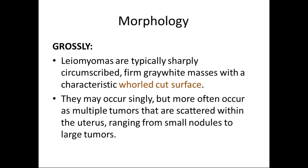Coming to the morphology of fibroids, grossly these leiomyomas are typically sharply circumscribed grey-white masses with a characteristic whorled cut surface. They may occur singly but often occur as multiple tumors scattered within the uterus, ranging from small nodules to large tumors.